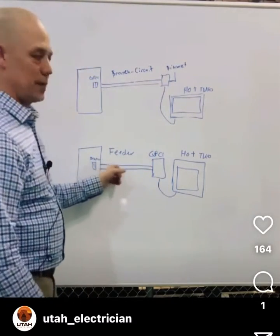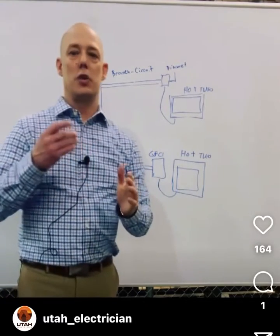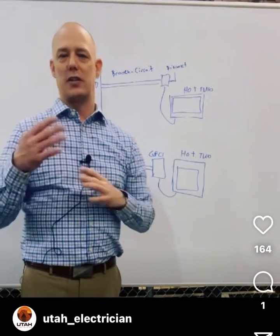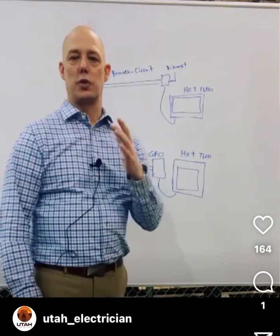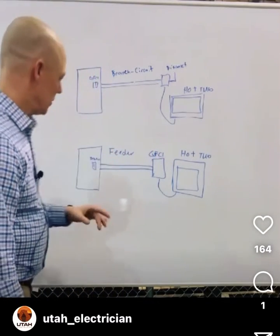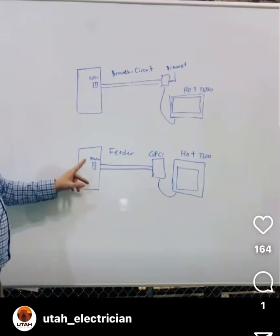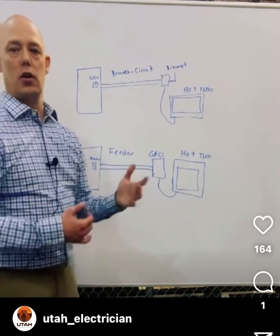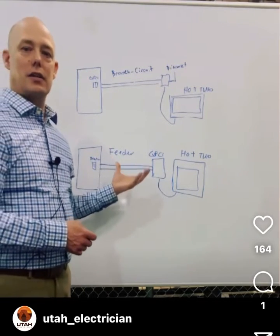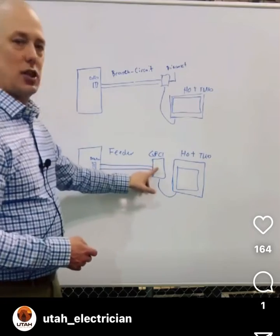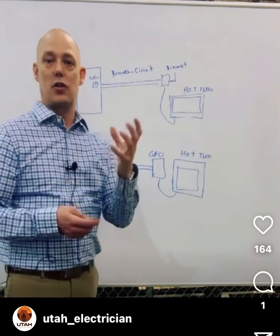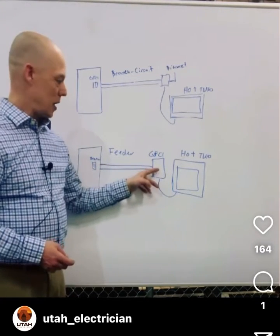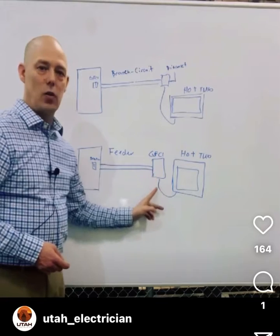Now down here, this becomes a feeder because a feeder is between my panel and my final overcurrent protection device — and there's some other stuff in Article 100 when it comes to feeders with separately derived systems, I would check that out. We've got a breaker that's not GFI protected that now feeds a spa disconnect. You can go to your local hardware store and buy a disconnect or a spa disconnect that has GFI protection. That disconnect, GFI protected, is also your last overcurrent protection device.